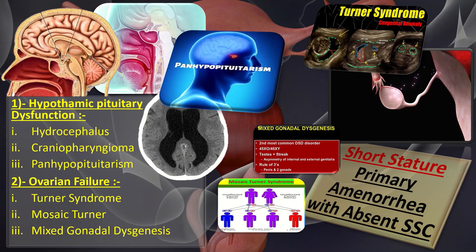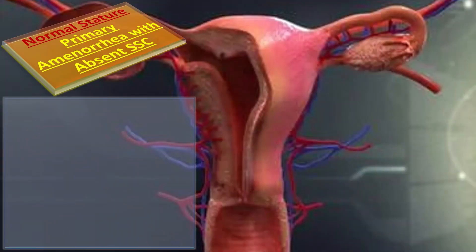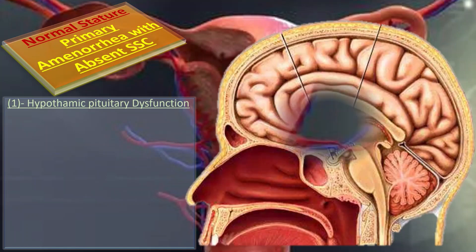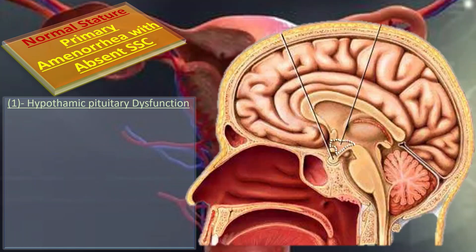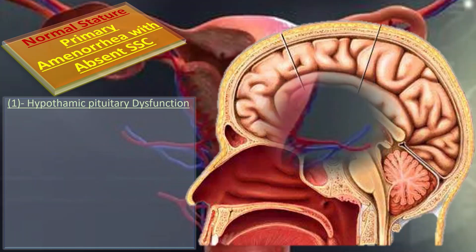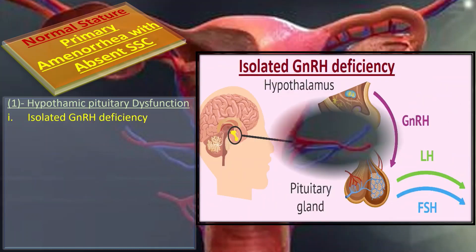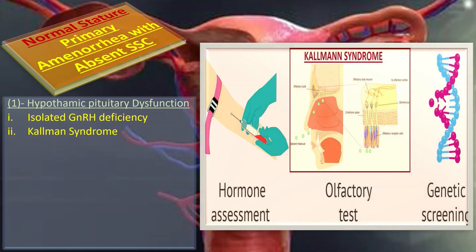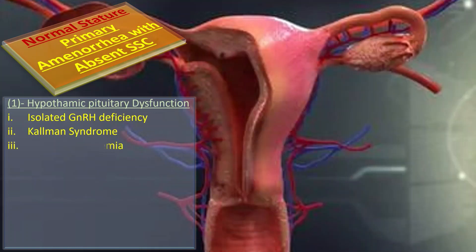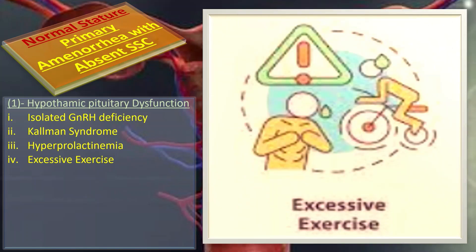Coming to the normal stature group — primary amenorrhea with absent secondary sexual characteristics but normal stature — we have two main subdivisions. First is hypothalamic pituitary dysfunction, which is hypogonadotrophic hypogonadism, and that includes isolated GnRH deficiency, Kallmann syndrome, hyperprolactinemia, excessive exercise, and weight loss or anorexia nervosa.